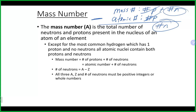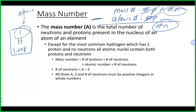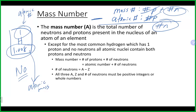Looking at the periodic table, the number above the symbol is the atomic number. The number below the symbol — for example, 12.01 for carbon — is not the mass number. That is the atomic mass, which is different. You can tell because mass numbers must be whole numbers, and the numbers on the periodic table are all decimals.